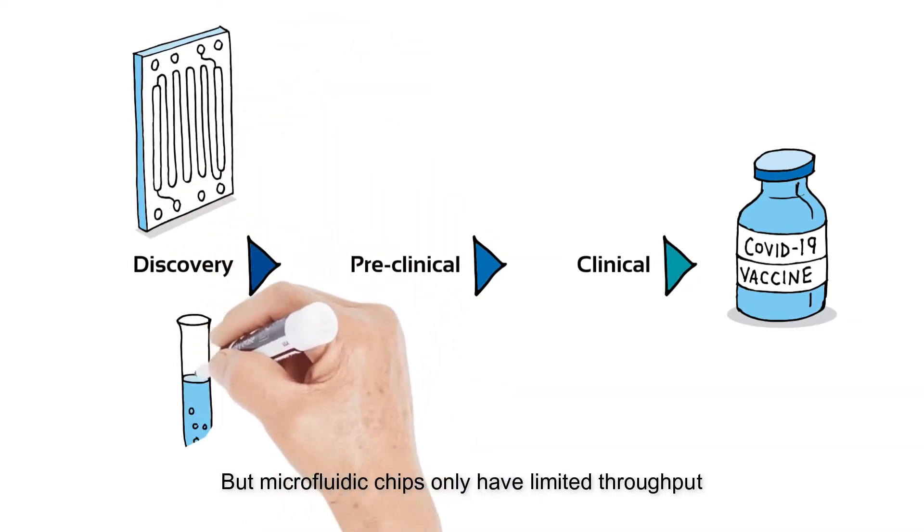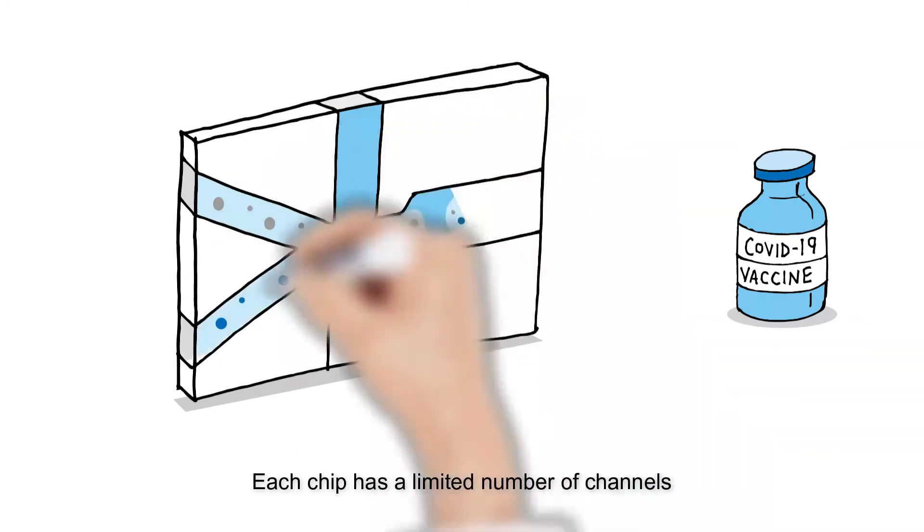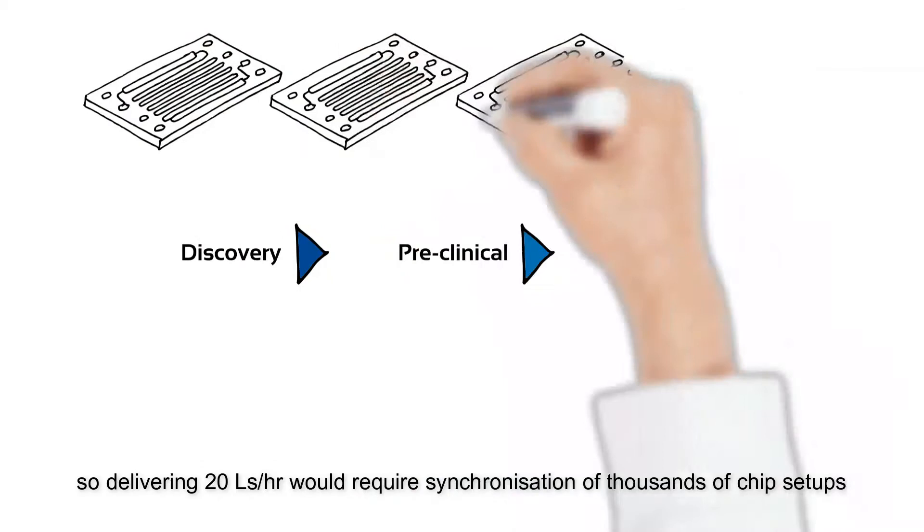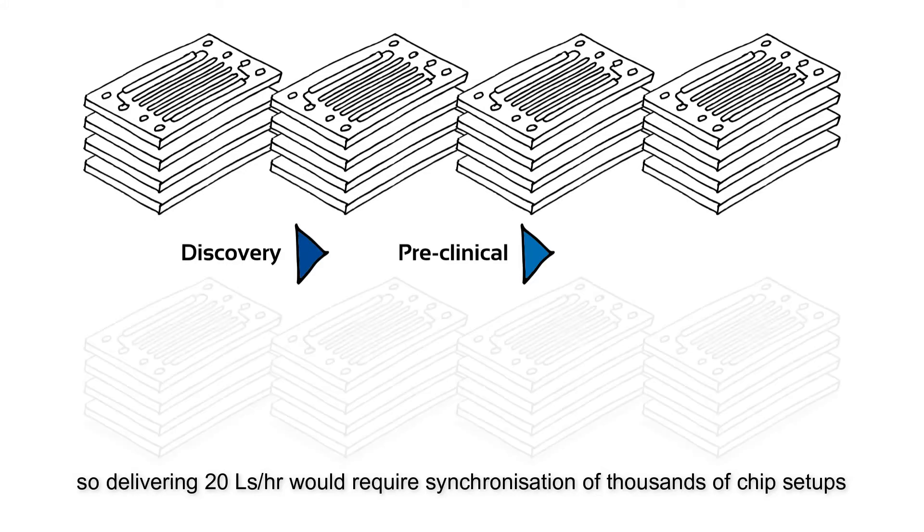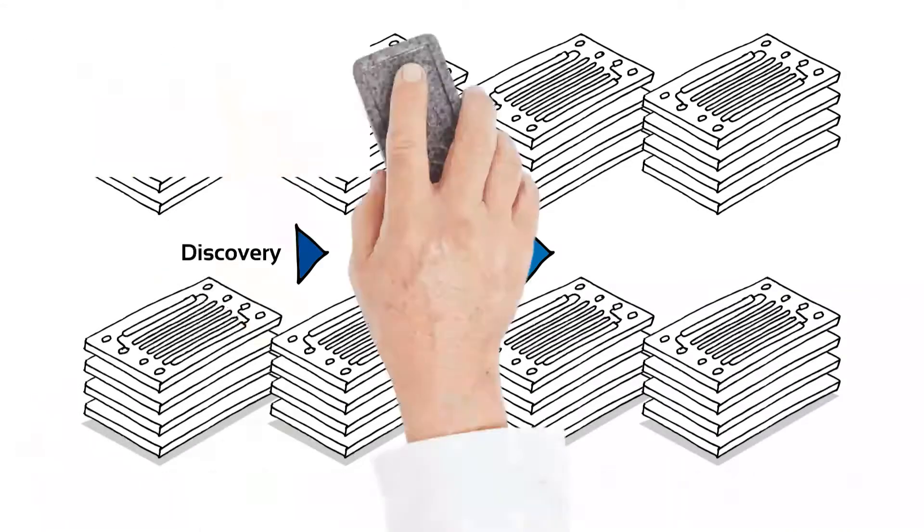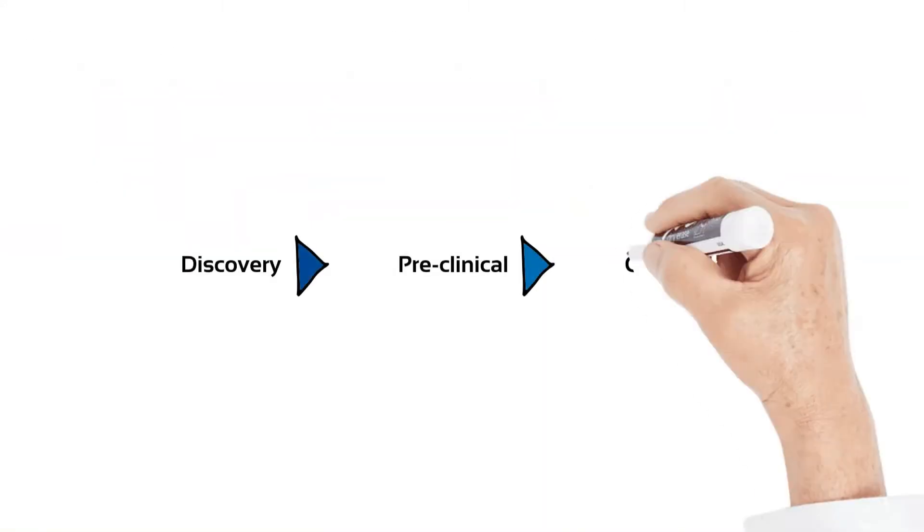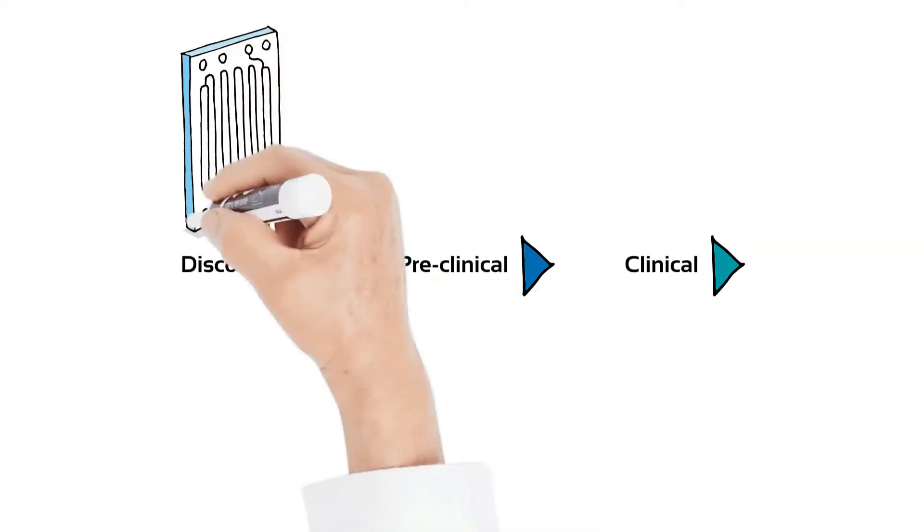Microfluidics can be used for formulation at the discovery stage, but each micro-fluidic chip has very limited throughput. You can use a number of micro-fluidic chips in parallel, but unlike computer chips, there are practical limits to fluid channel miniaturization and they require complex setups. So it's just not possible to scale up formulating using micro-fluidics.